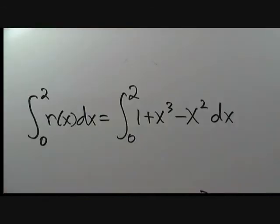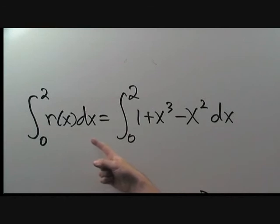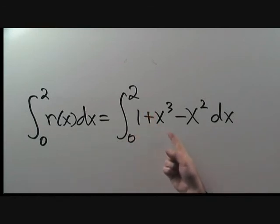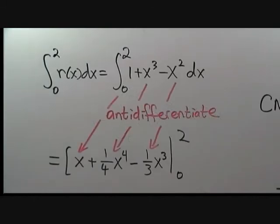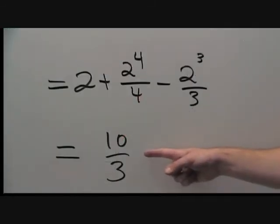Our second integral is the integral from 0 to 2 of ρ dx. Again, we were given the expression for ρ, so we need to compute the integral from 0 to 2 of 1 + x³ − x² dx. Anti-differentiating term by term and evaluating at x = 0 and x = 2 gives 10/3 as our answer for the second integral.